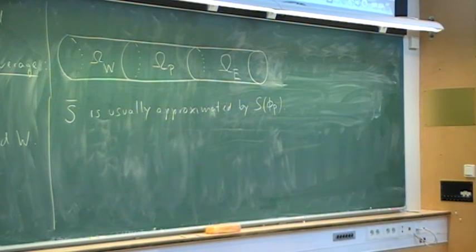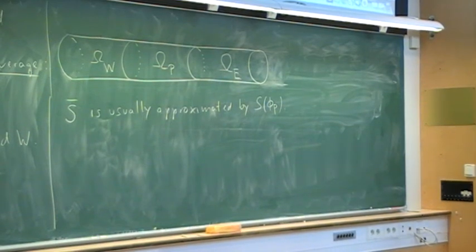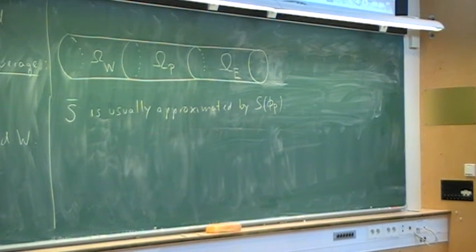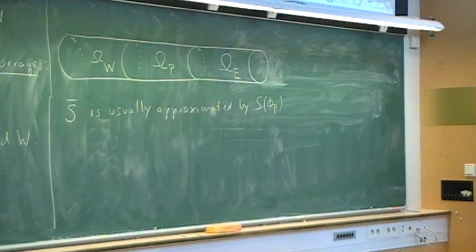We extend this framework with western cell omega_W, central cell omega_P, and eastern cell omega_E. The idea is to approximate gamma and d-phi/dx by means of the cell averages in cells P, E, and W.